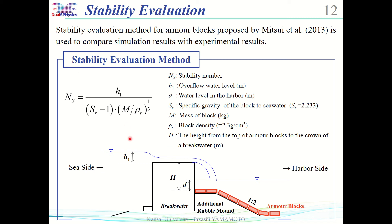The ratio of the water level in the harbor at the height from the top of the armor block to the crown of a breakwater is taken as a horizontal axis, and the stability number is taken as a vertical axis to evaluate the effect of damage to the block and the water level.